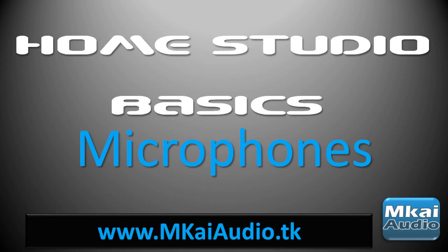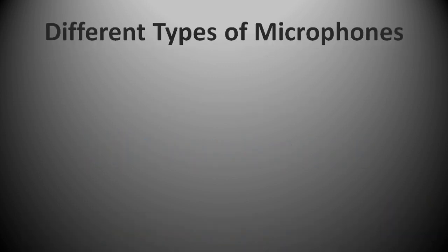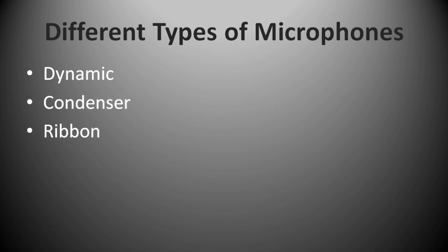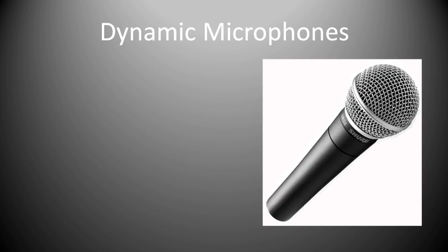Hey everyone, this is James from mkiaudio.tk, back with the third part of this video series I'm calling 'Home Studio Basics.' In this part I want to look at microphones. So what are the different types of microphones? We have dynamic, condenser, and ribbon microphones. There are others available and different types within these three main categories, but today we're just going to look at these three basic ones that you'll be using in your studio.